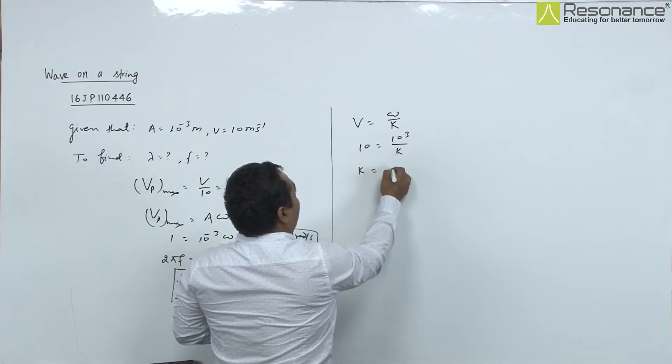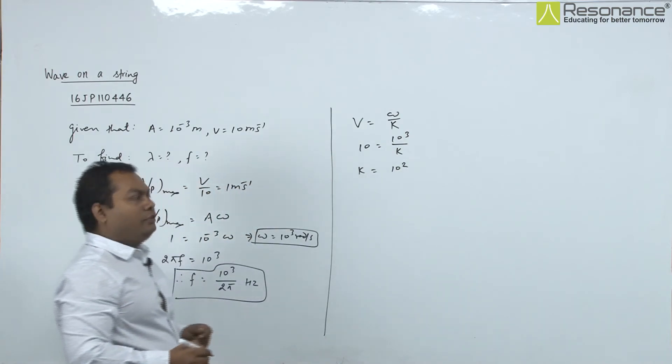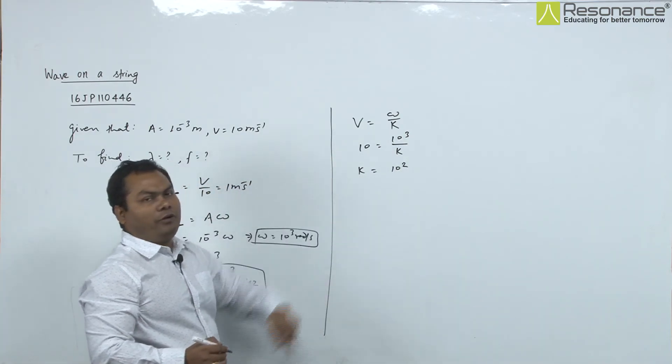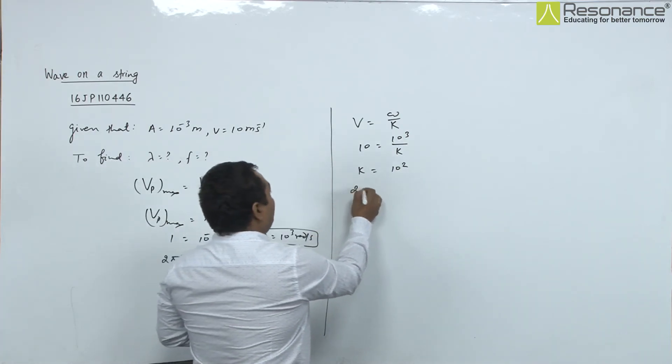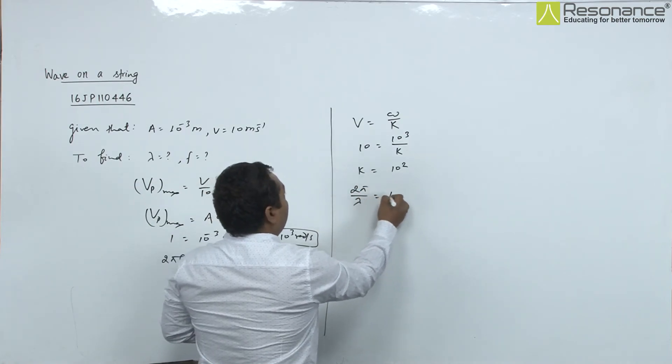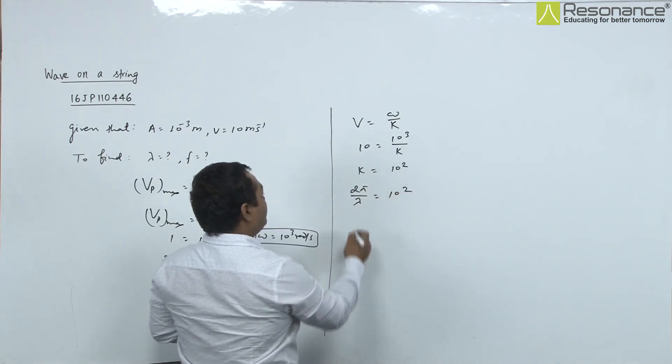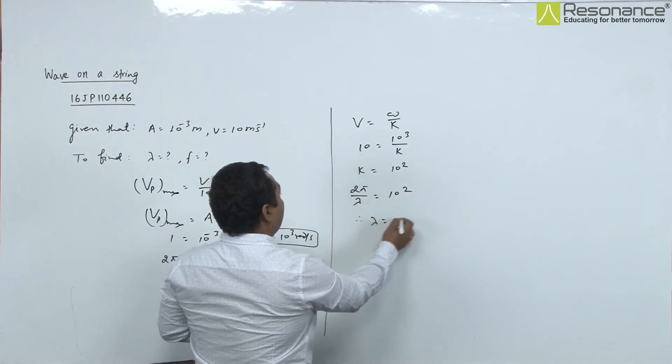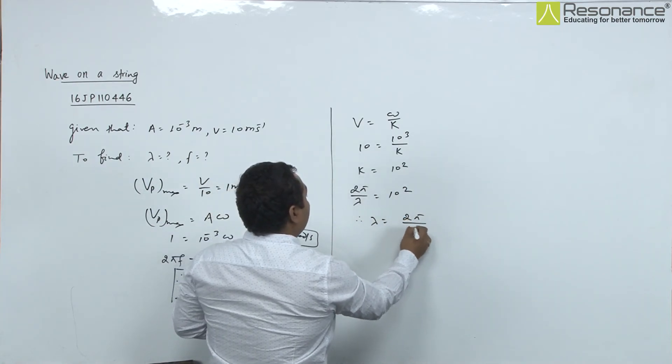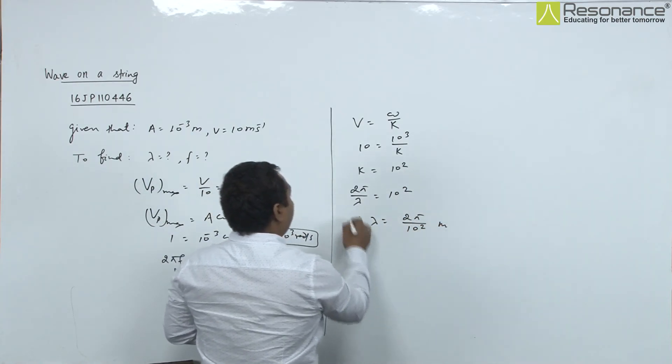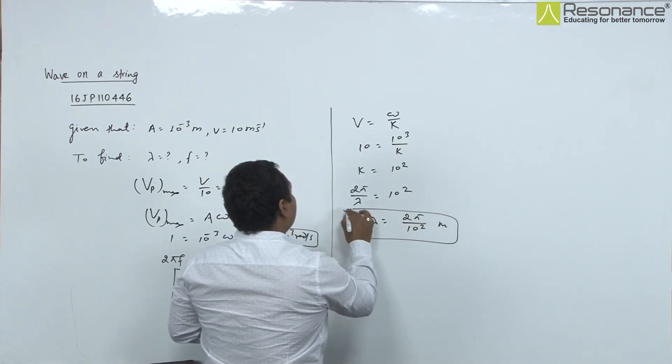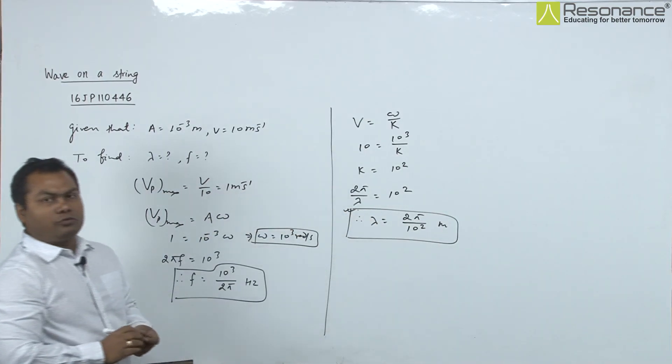So k equals 10^2. This is the wave number k, which equals 2π / lambda. That will be 10^2, so our lambda equals 2π / 10^2 meters. This is the desired result for the question.